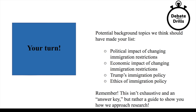Keep in mind, this isn't a complete list of background topics and it's definitely not a final answer key. Instead, this should be a guide to show you how we approach research. You probably found lots of other background topics when you did your research, and that's great. The general idea is that you should have a wide map of what's included in the immigration topic that will then help guide you as you move on to the next step.